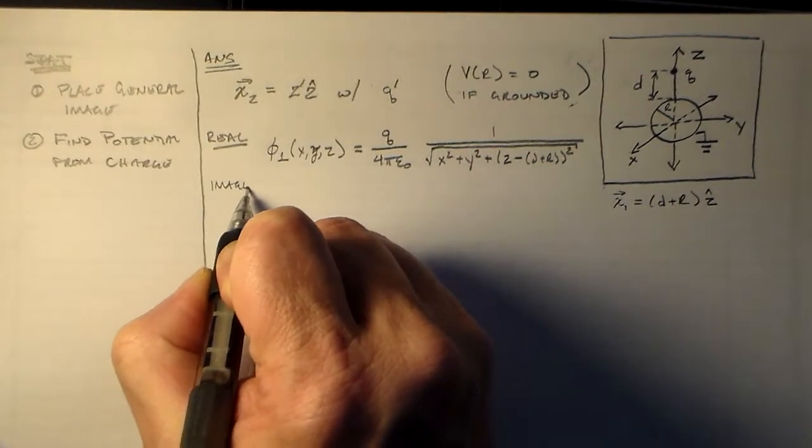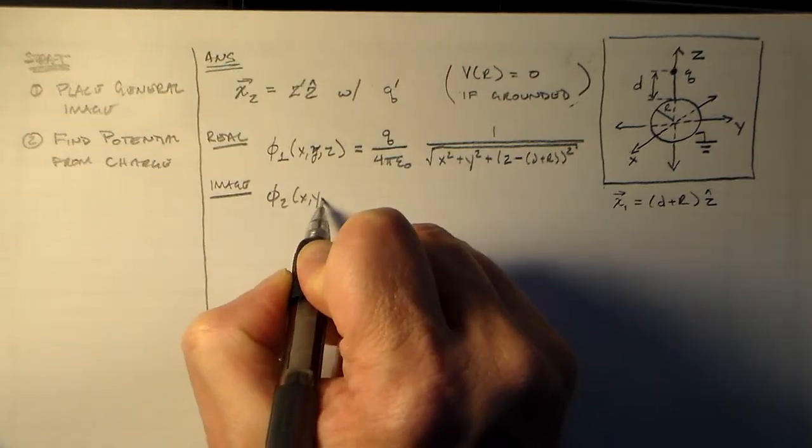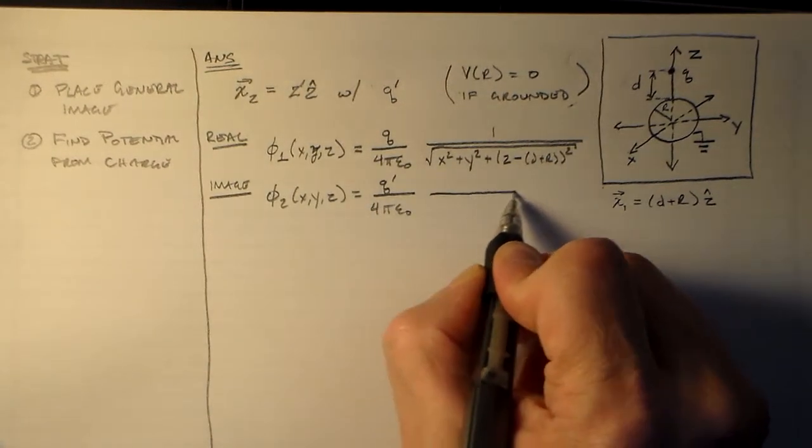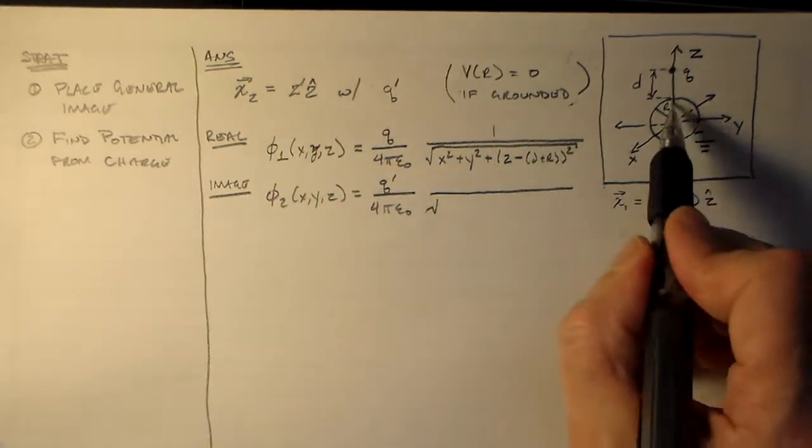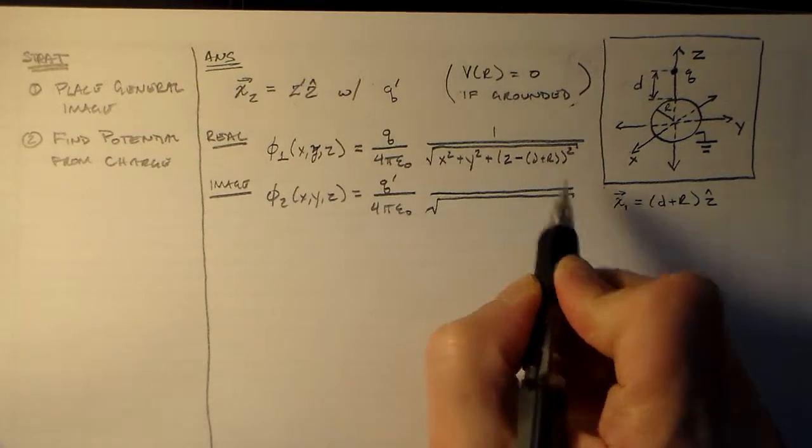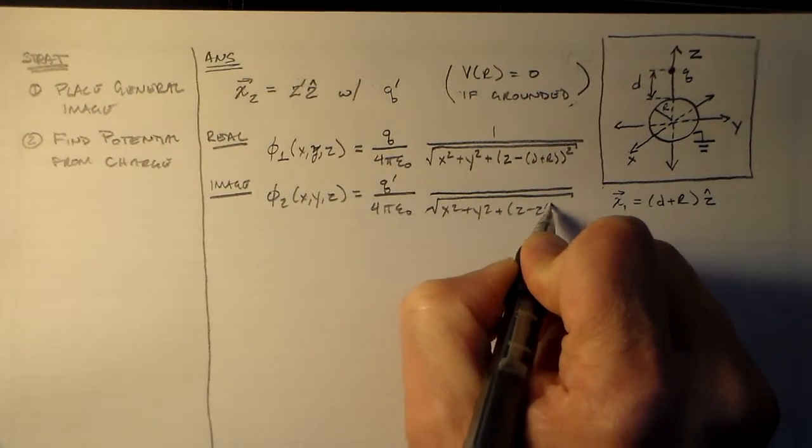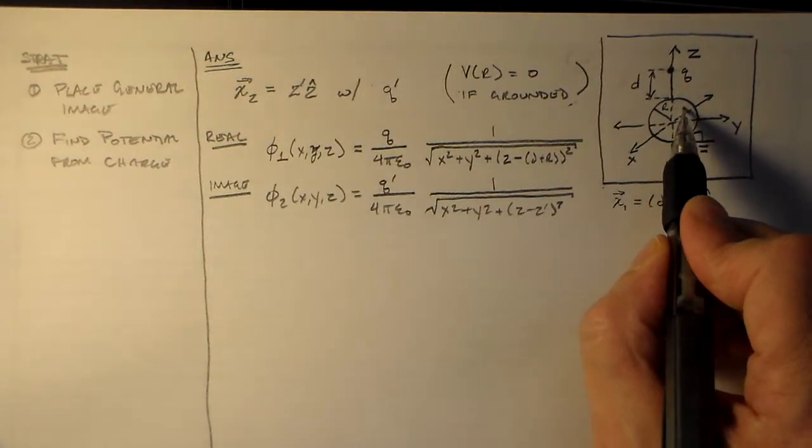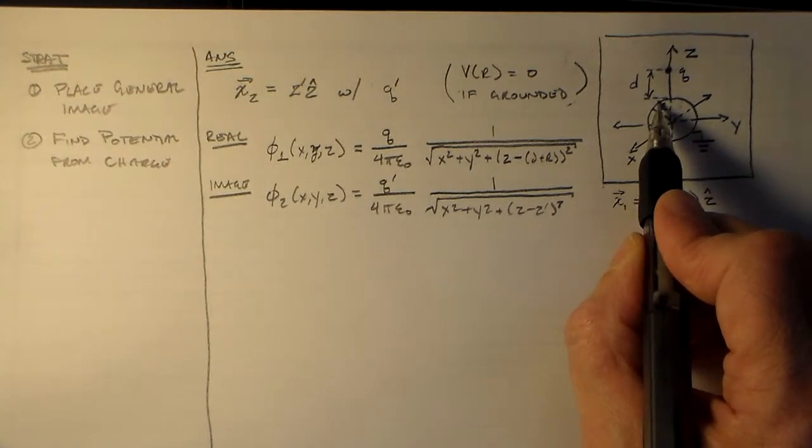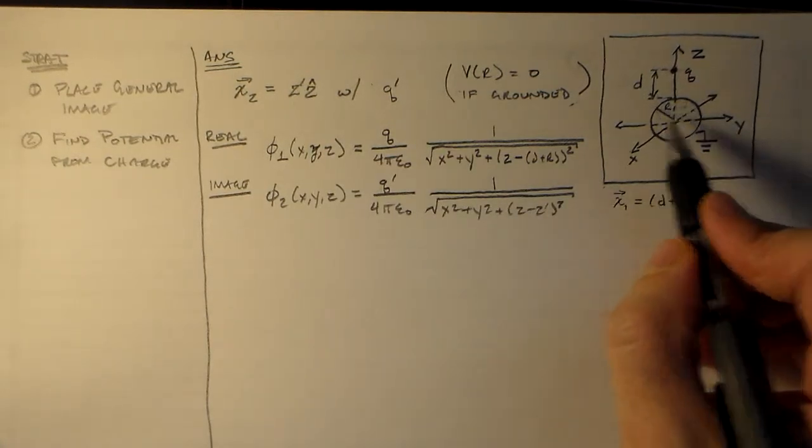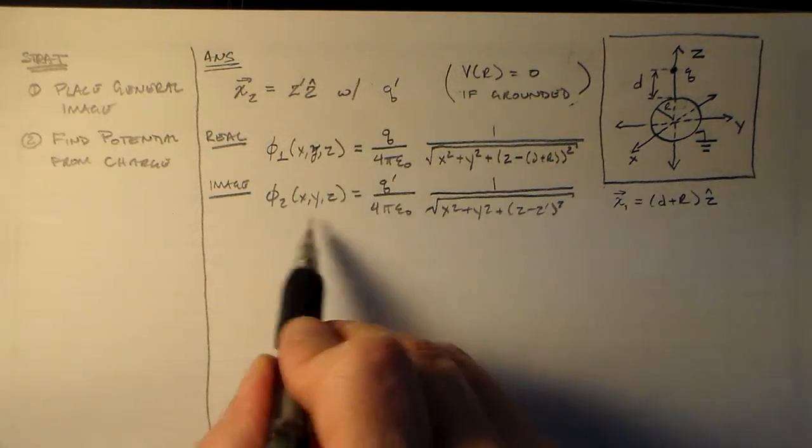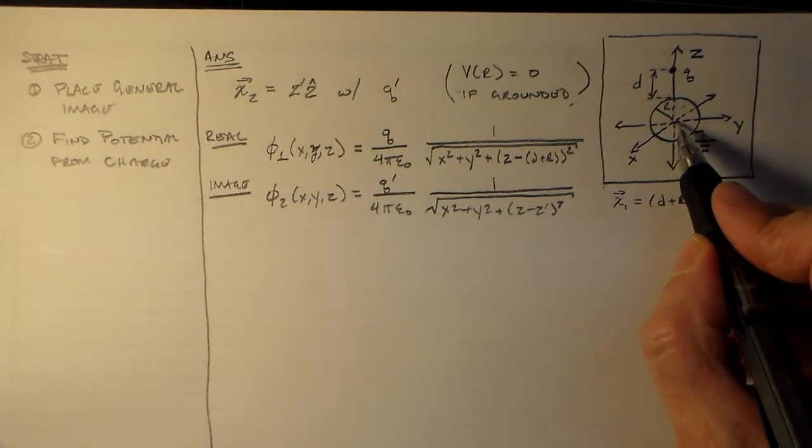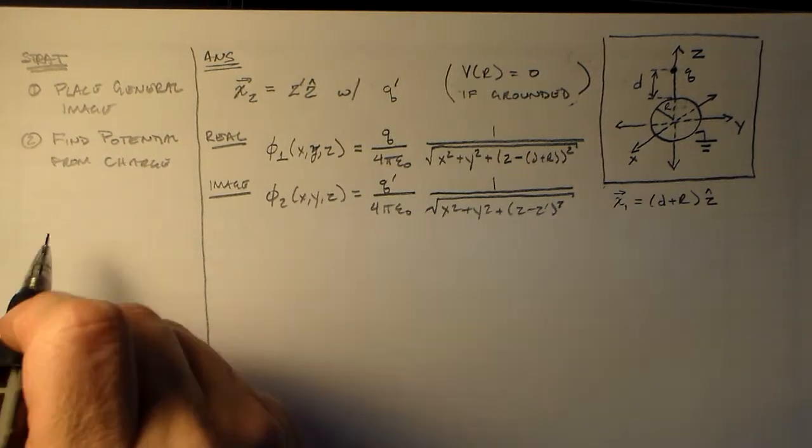So phi 1 at some point x, y, z is the charge over 4 pi epsilon naught times 1 over the distance between here and whatever point in space. So that distance is, since this is on the z-axis, it doesn't have any x or y components, so it's just x squared plus y squared, plus the difference between here and wherever it is along here that you are. So z, which is some point on this sphere, minus d plus r, which is up here. So that's for my real charge.